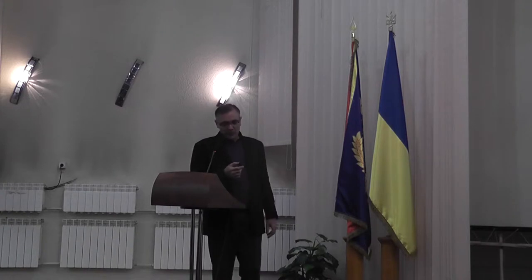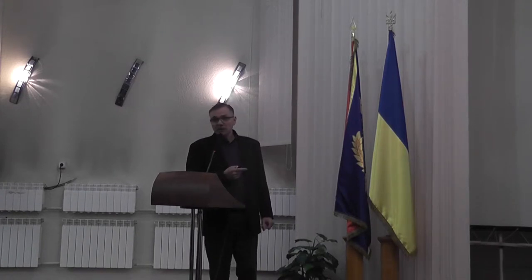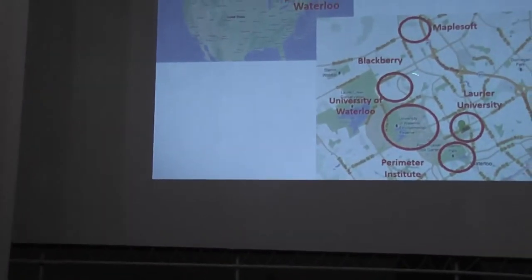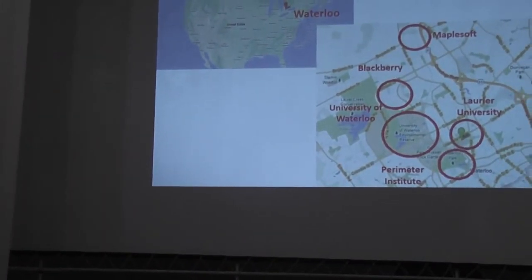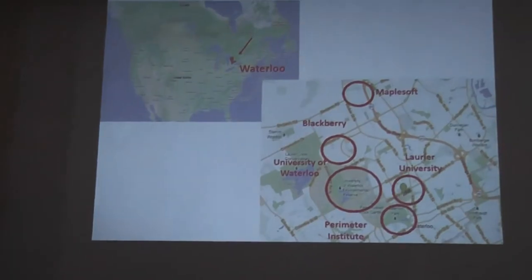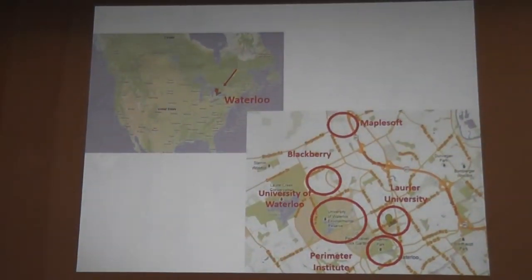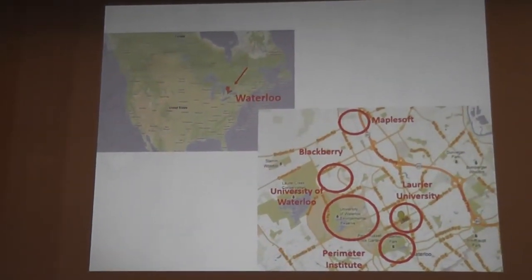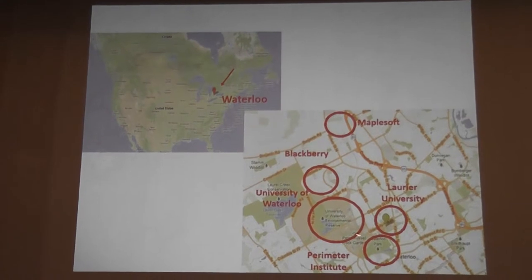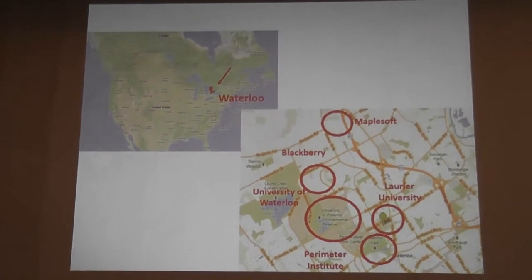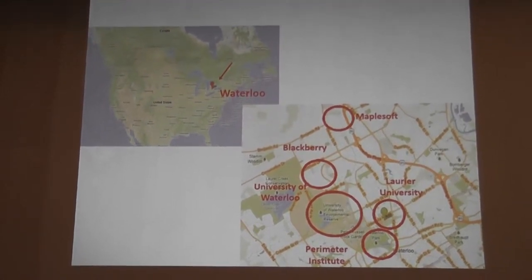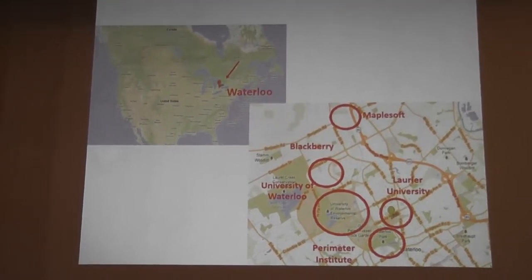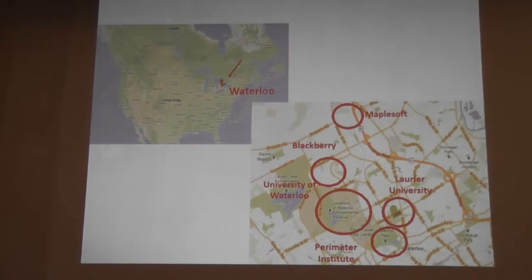I came from Waterloo, which is just 50 minutes west of Toronto. We have two universities there. This is Waterloo, which is only 100 years old, and the University of Waterloo was created on the basis of Waterloo. We have the Perimeter Institute for Theoretical Physics, and we have Gryf, Waterloo, and we have Merkel, so we work out.